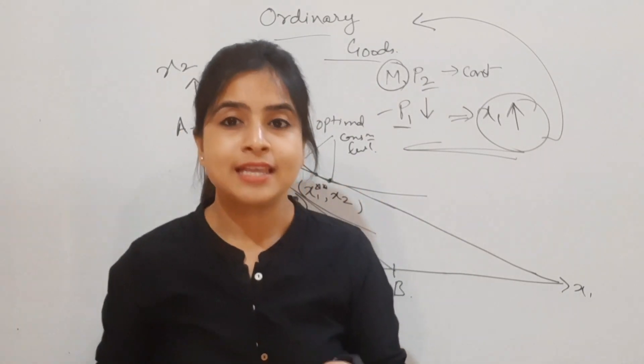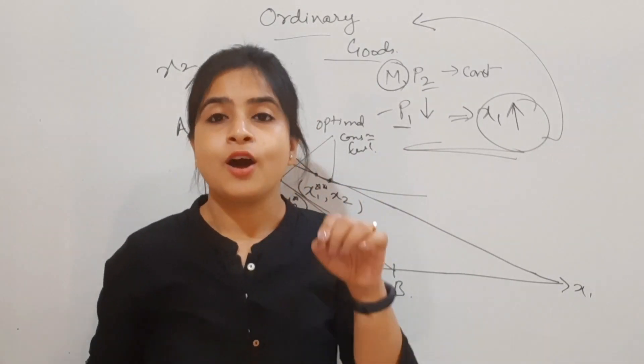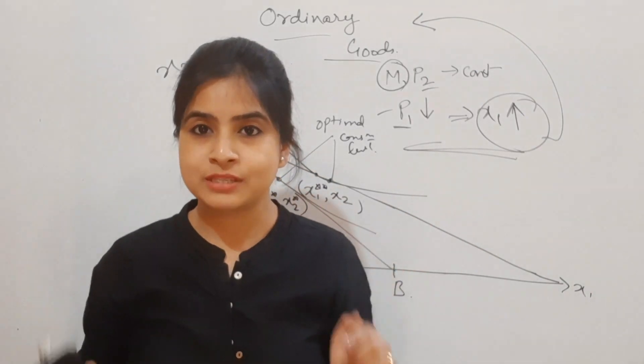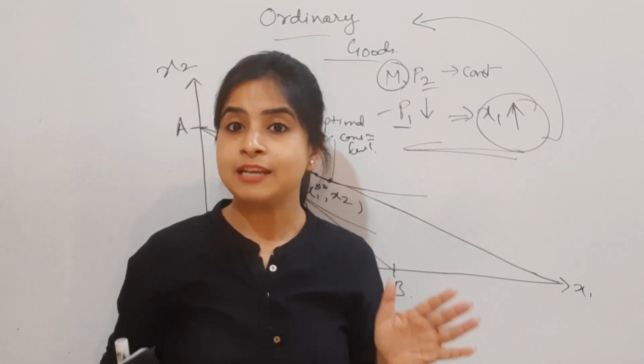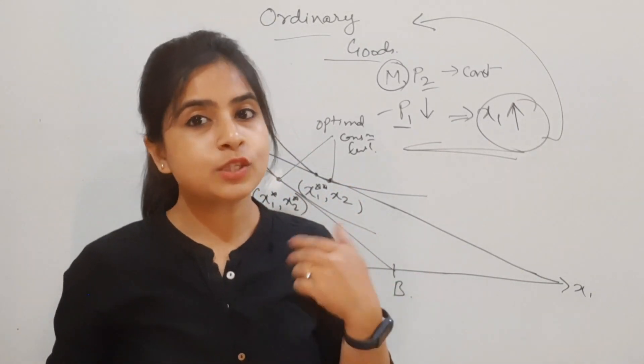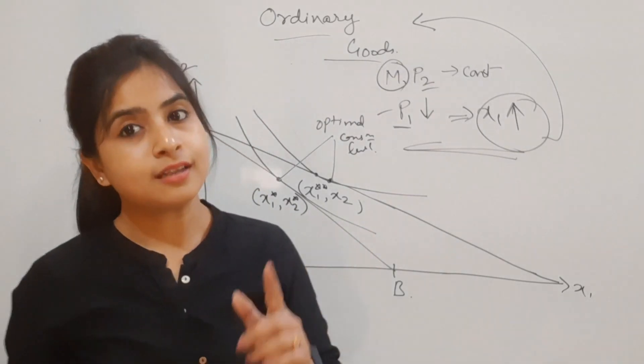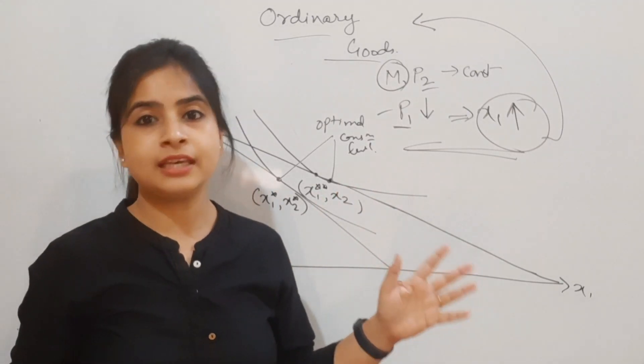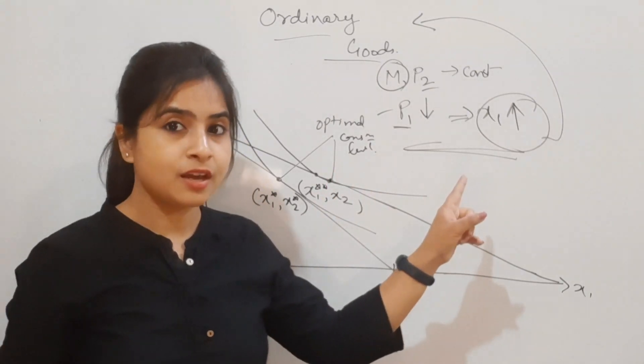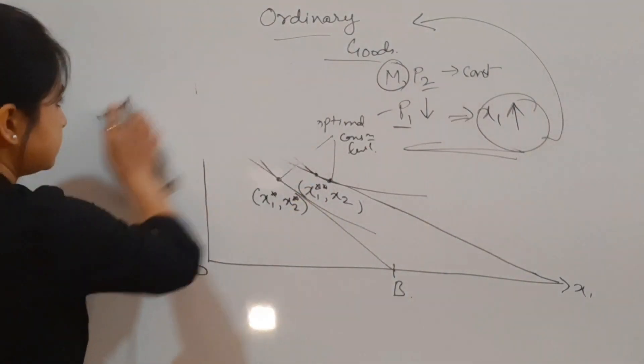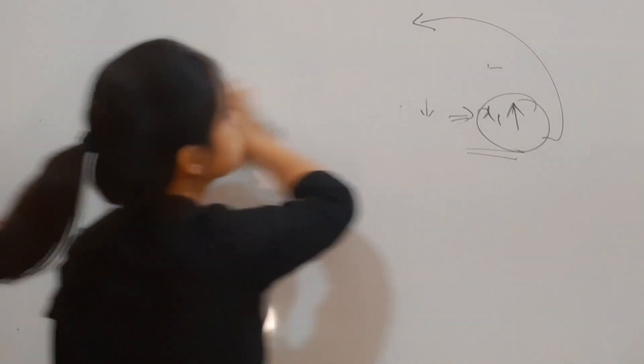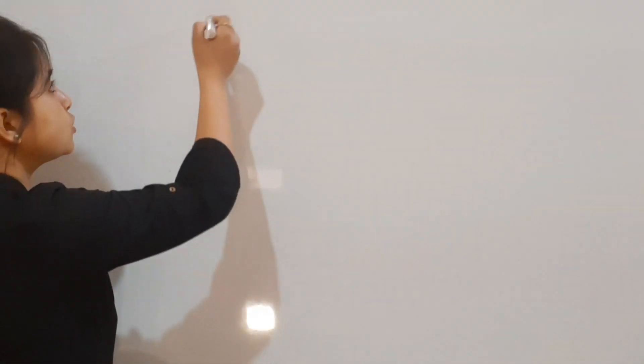This is the case for ordinary goods. Now the question arises: is it always the case that if there's a fall in price of p1, consumption of x1 will go up? The answer is no, not every time. When the answer is no, the concept of Giffen goods comes in.